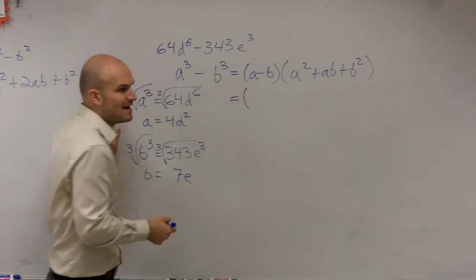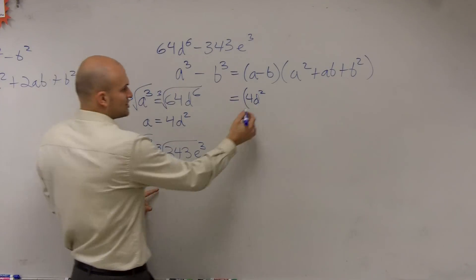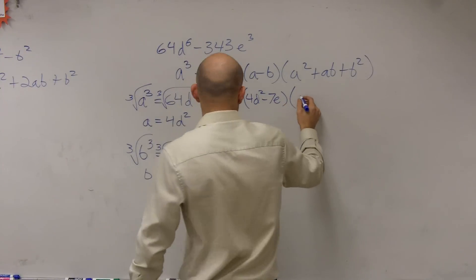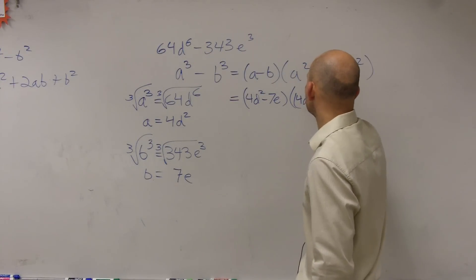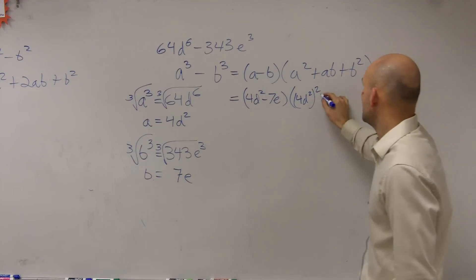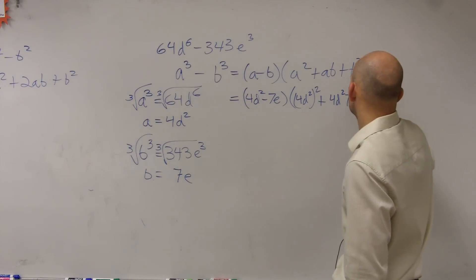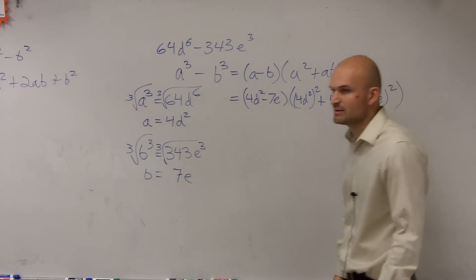So we say a minus b. Well, now I say a is 4 d squared minus b, which is 7 e, times your a squared, which is make sure you put this in parentheses, plus a, which again is 4 d squared, times b, which is 7 e, plus 7 e squared. Got to make sure that you put your a and b when you're squaring them, put them in parentheses.